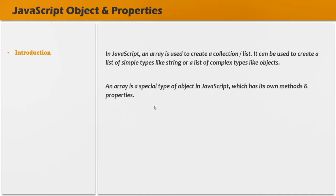In one of the previous lectures, we learned that any value which does not belong to the seven primitive types is an object in JavaScript. An array does not belong to any of the seven primitive types, and that's why an array is an object in JavaScript.